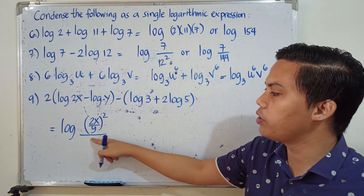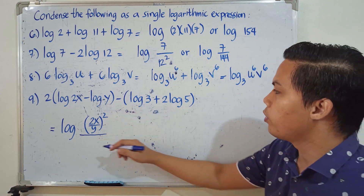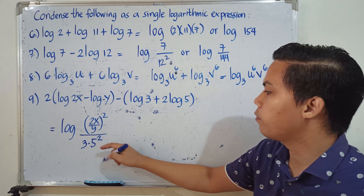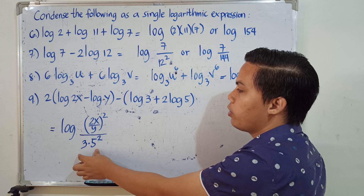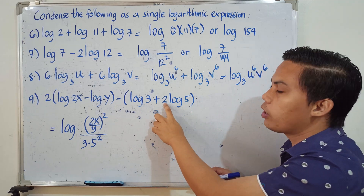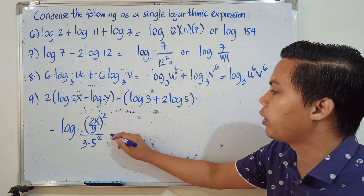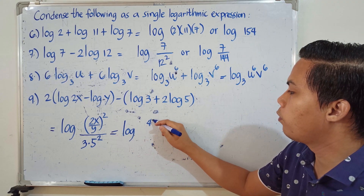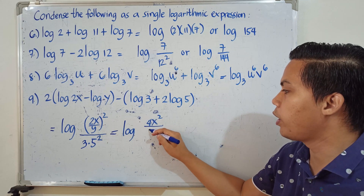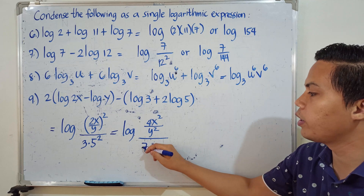For the second part, we have logarithm of 3 plus 2 times logarithm of 5. The 2 becomes the exponent of 5 (power rule), and since it's addition, we multiply: this becomes 3 times 5 squared, which is the denominator. Since the overall operation between the two parts is subtraction, we divide. Simplifying: the numerator has 2x over y raised to 2, giving 4x² over y². The denominator is 3 times 25 = 75.